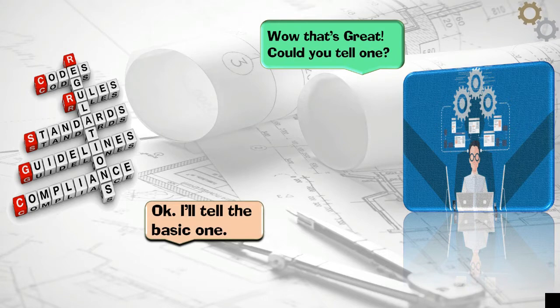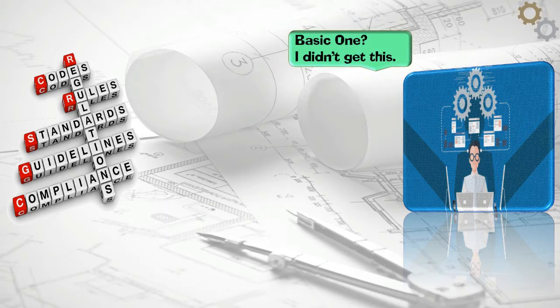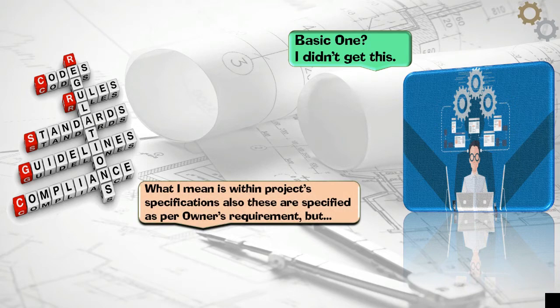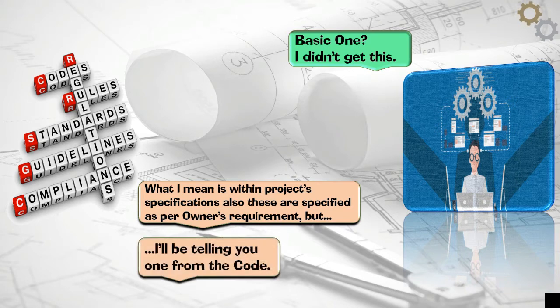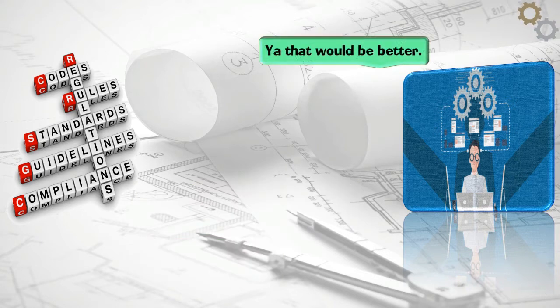Okay. I'll tell the basic one. Basic one? I didn't get this. What I mean is within project specifications also these are specified as per owner's requirement, but I'll be telling you one from the code. Yeah that would be better.